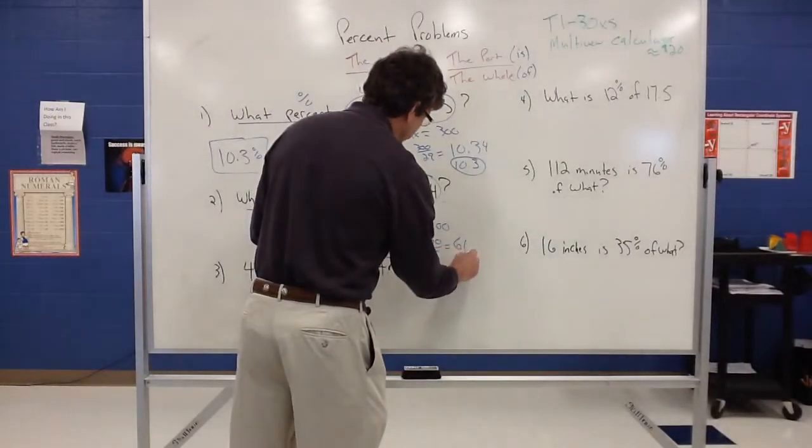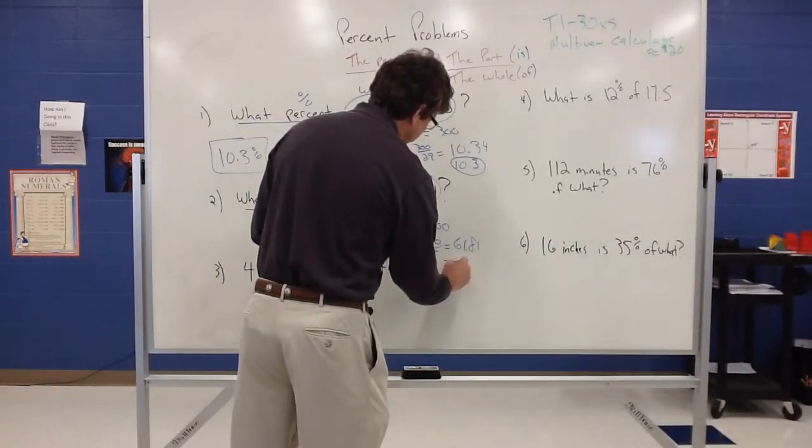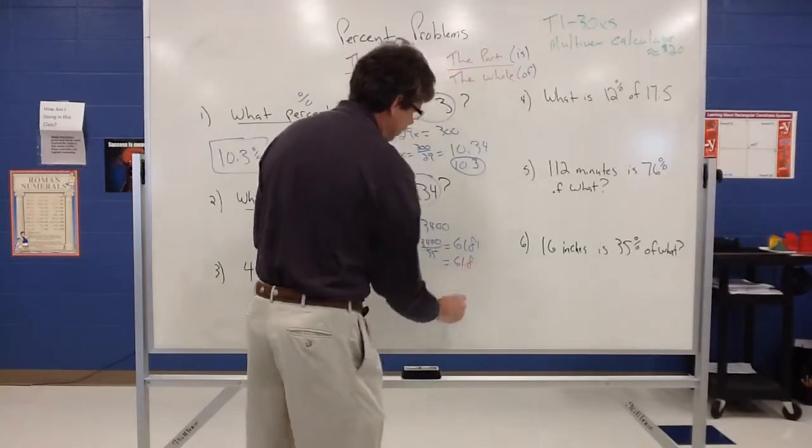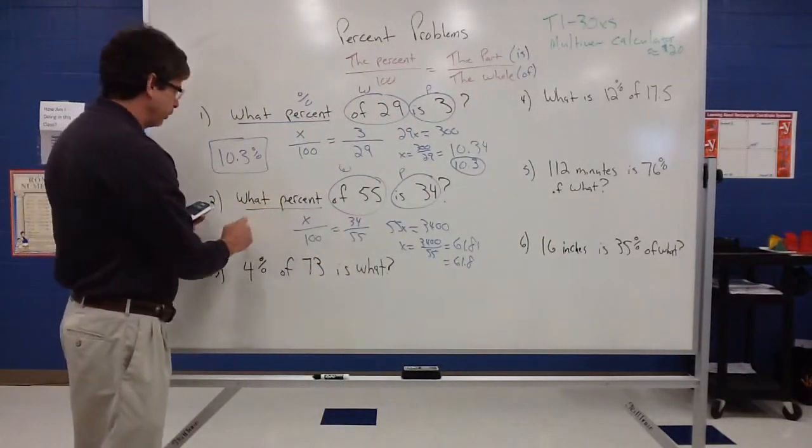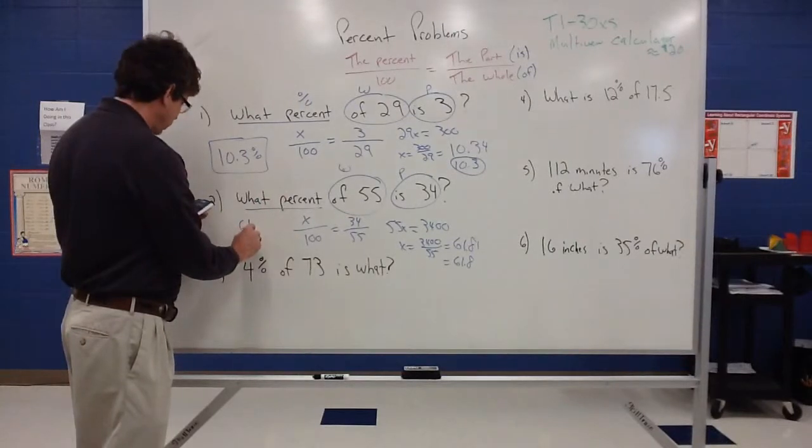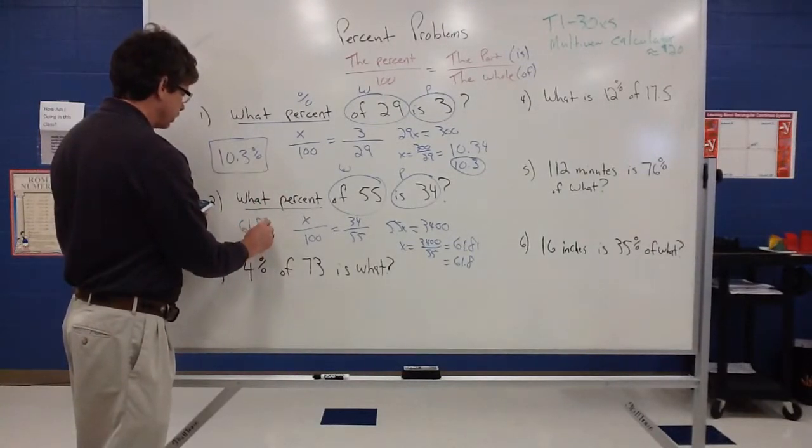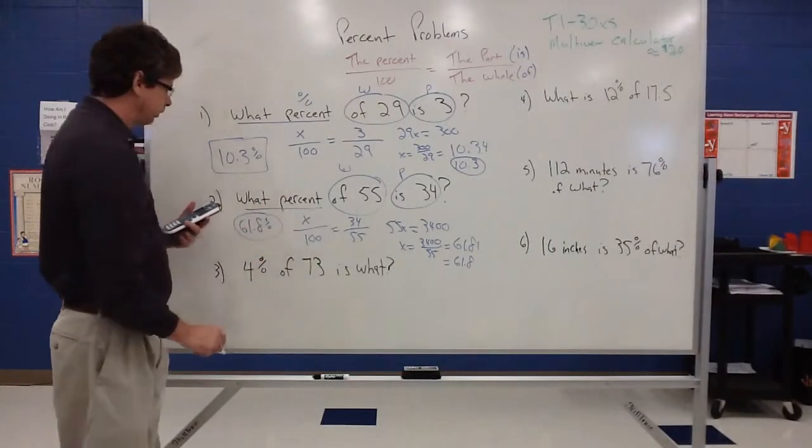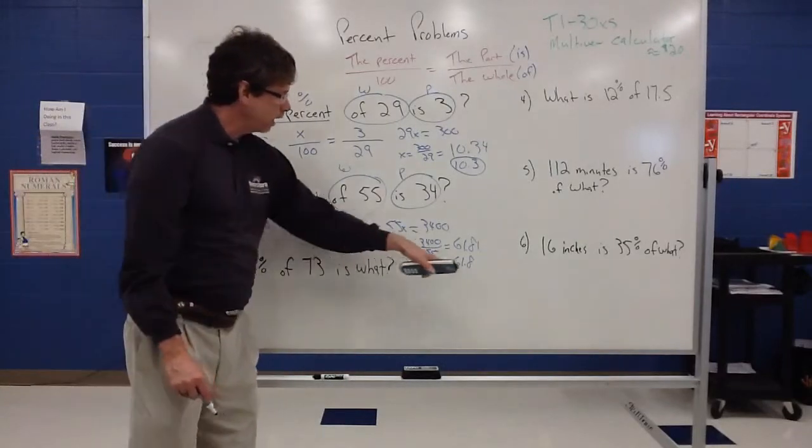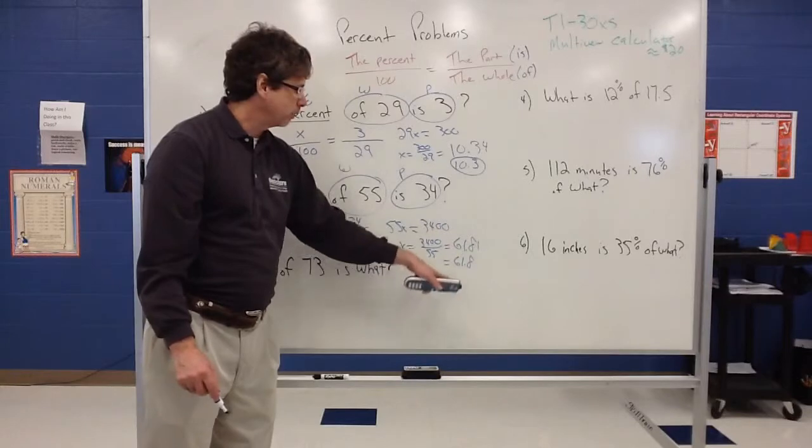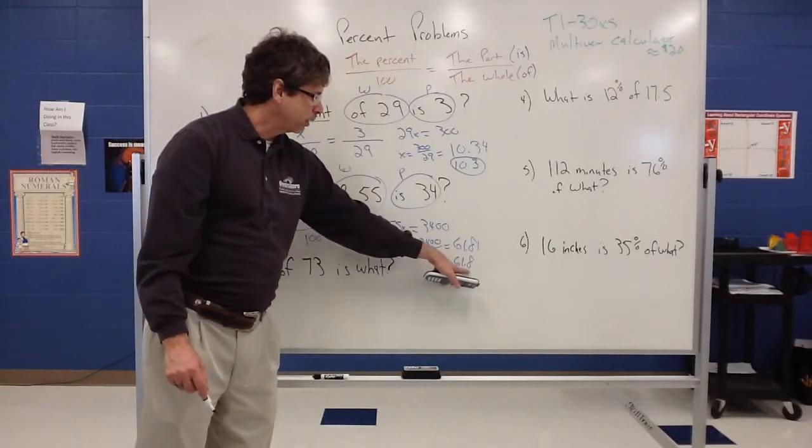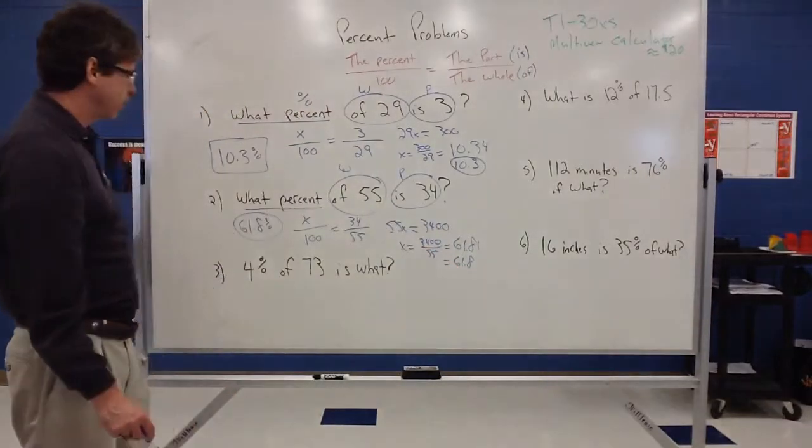So 3,400 divided by 55, that's going to give me like 61.8181. So 61.81, and again it's going to round to about 61.8 if I round to the tenths place. So since we're looking for a percent, we would say 61.8% rounded to the tenths place. So again, notice how I have a one in the hundredths place, that tells me I'm closer to eight than I am to nine, so we wouldn't round it up to 61.9, we would just leave that at 61.8, we'd round back down.